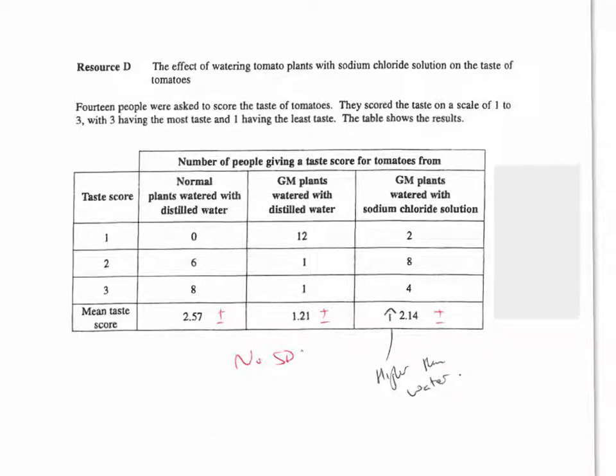So let's evaluate. Watering GM tomatoes with salt solution improves the taste. The mark scheme is really comparing these two. So you've got GM tomatoes and GM tomatoes with salt. So the agree point would be the mean is higher. Disagree points would be you've got a small sample size, so it's not representative. There's also no standard deviation bar, so we cannot see if that difference is significant. We can't see if this is a significantly higher taste score. I would also say that an against point would be it's lower than normal tomatoes. But an important point to make is taste, it's a subjective score. It's not quantitative. So can you really compare the results?